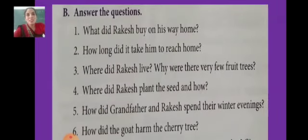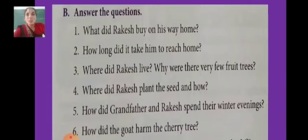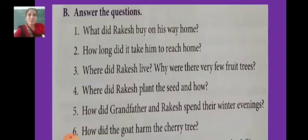B. Answer the questions. Number 1: What did Rakesh buy on his way home? 'Buy' is the first form of the verb, and 'did' is telling you the past tense in the question, so your answer must be in the simple past tense form. 'Buy' will be changed into 'bought.' Rakesh bought a few cherries on his way home.